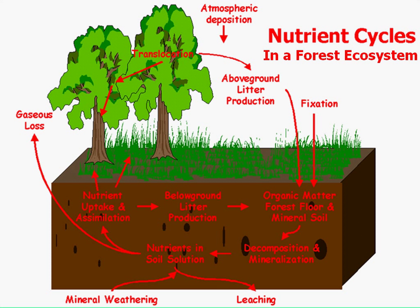Looking at nutrient cycling in a forest ecosystem, this is a brief diagram of what's actually going on. You have nutrients deposited from the atmosphere onto the forested landscape. Vegetation uptakes and assimilates those nutrients, but you also have litter production when vegetation sheds leaves or dies, which goes back into the soil. Organic matter is broken down by microbes and the environment, and those microbes also release gases. It's a circular system that dictates the functions of plant and animal life and growth in the forest.